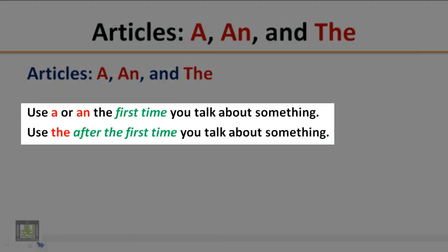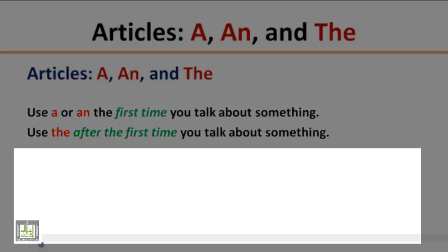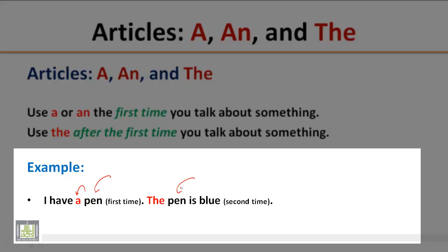Use A or An the first time you talk about something. Use The after the first time you talk about something. Example: I have a pen. Here the word pen is mentioned for the first time, so it is preceded by A. The pen is blue. Here the word pen is mentioned for a second time, so it is preceded by The.